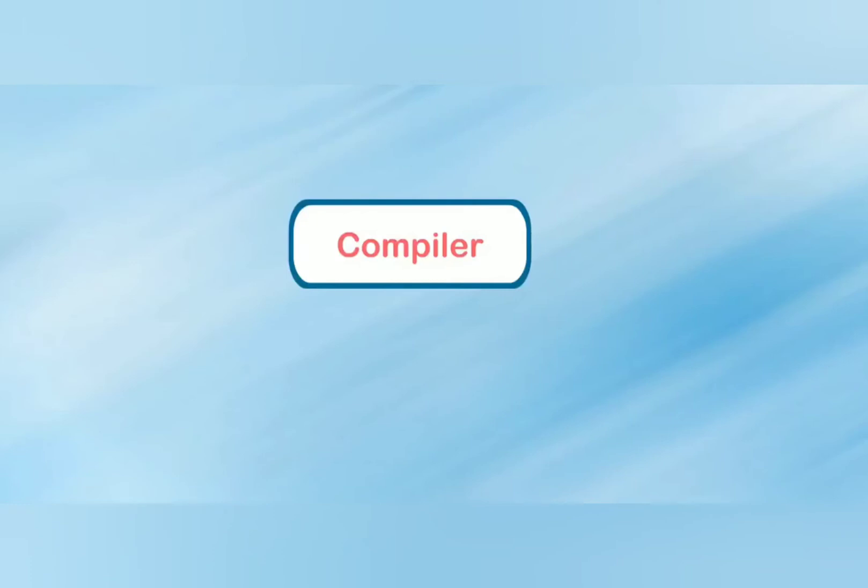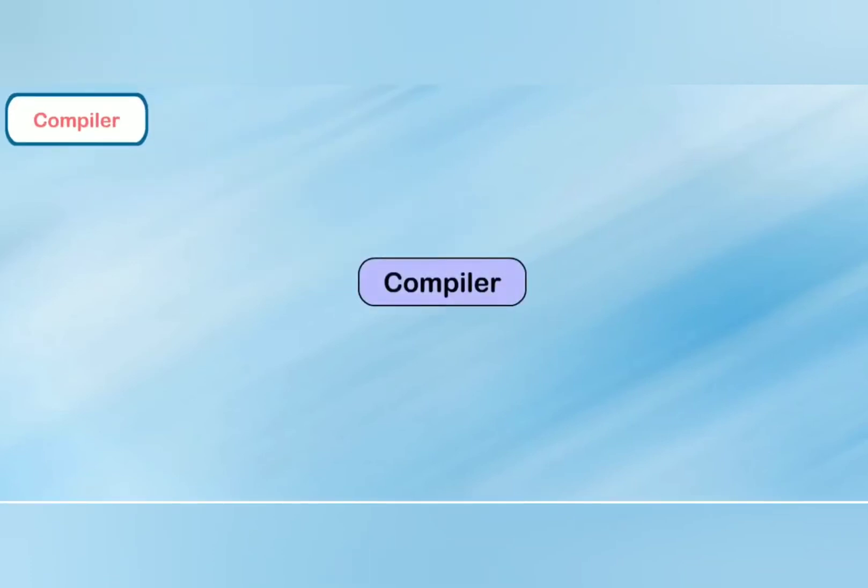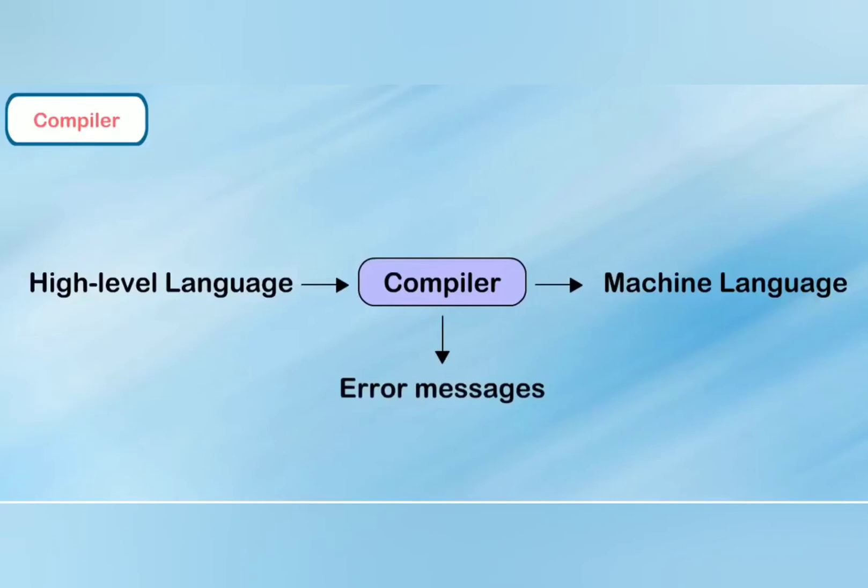Compiler: The compiler is a translator which converts high-level language to machine language. The compiler also helps in checking the error while converting from high-level language to machine language.